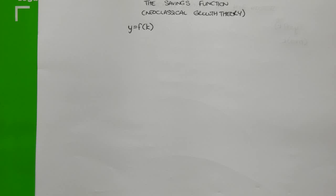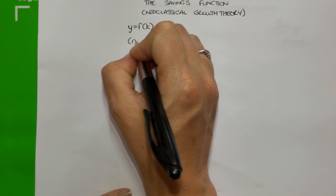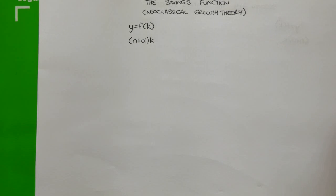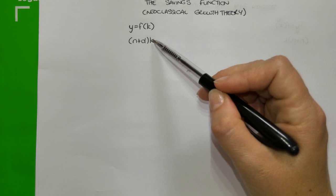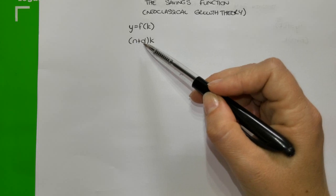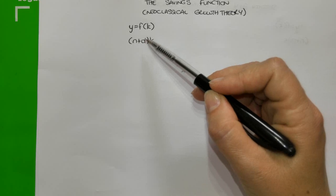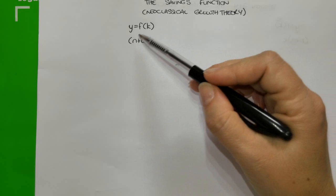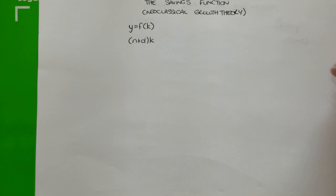and this is because of diminishing marginal returns. We also looked at the Investment Function, or the Investment Requirements, shown mathematically as lowercase n plus lowercase d, times k. Lowercase n stands for the Population Growth Rate, and lowercase d stands for the Depreciation Rate of Capital. Both increases in the Population Growth Rate and increases in Depreciation can affect the value of capital stock per person.